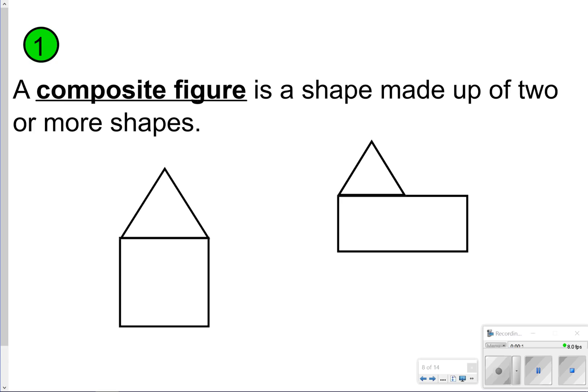The first thing we want to make sure we understand is what a composite figure is. Basically a composite figure is any time one shape is made up of two or more shapes. Let's go ahead and take time now just to jot that down. Maybe you can draw one of those composite figures. The easiest one is a house. You probably do that when you're little, but it's basically when you put two or more shapes together. Go ahead and pause now, write it. Once you're done, click play so we can move on to number two.